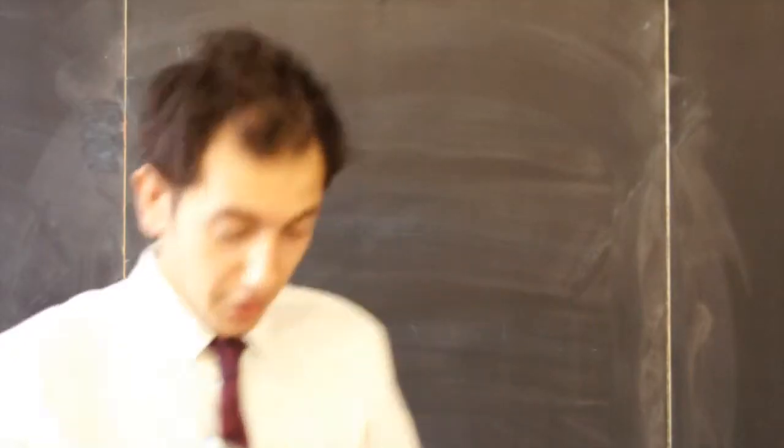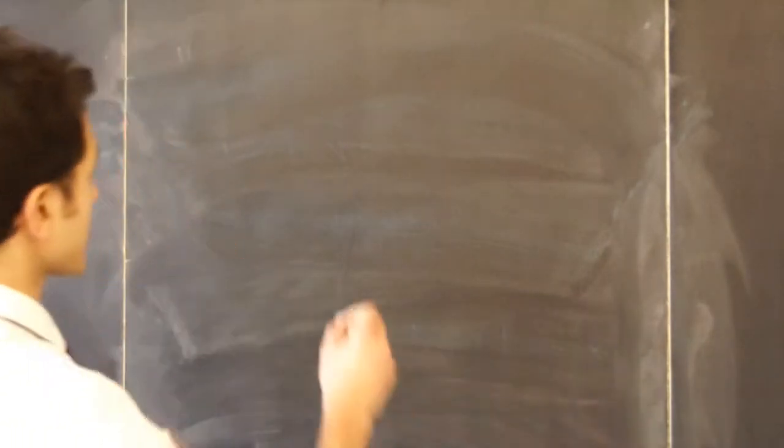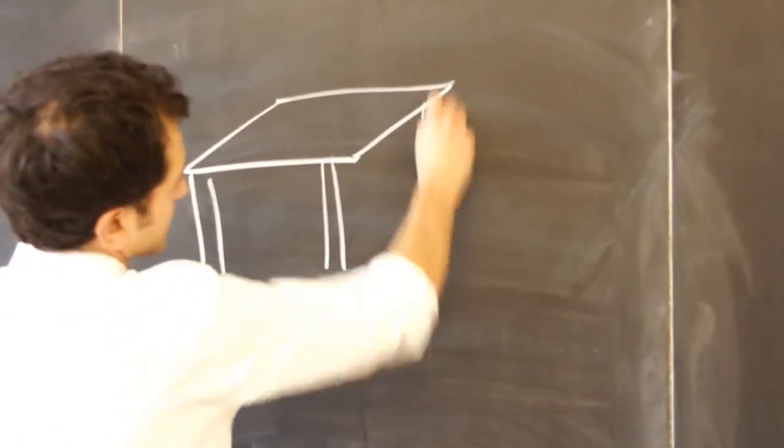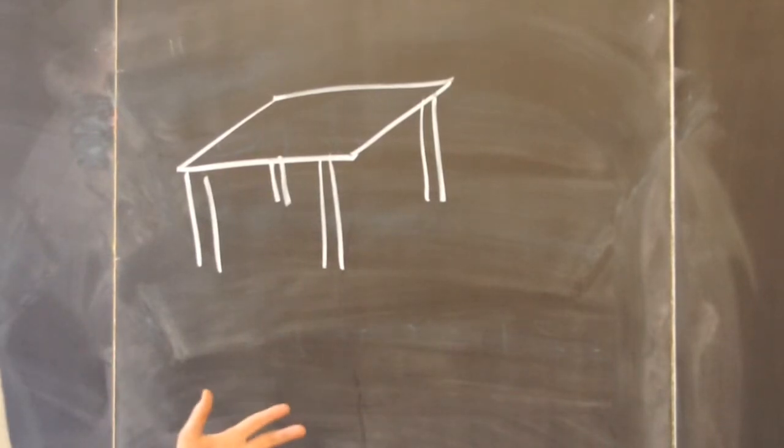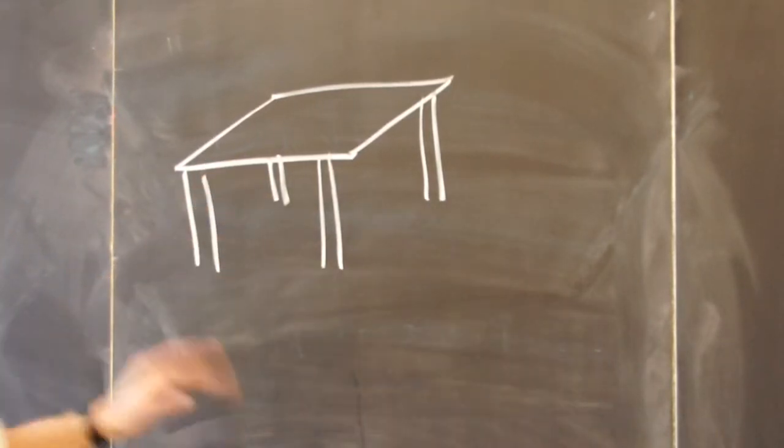What do legs do? Well, they hold you up. Imagine a table with four legs. The table can take a certain amount of weight. If you put too much weight on it, the legs will break.